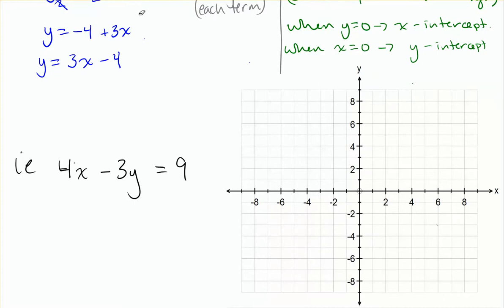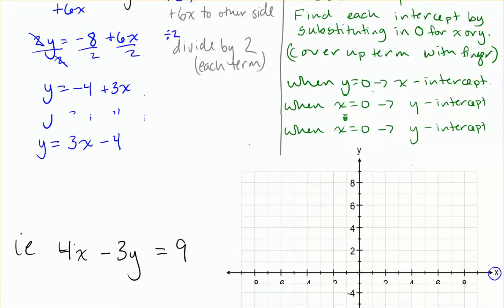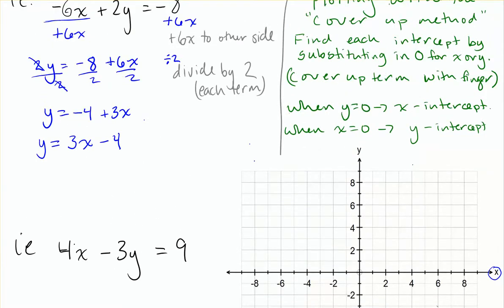And the reason that happens is because on the x-axis, y has a value of 0. So it will tell us where our line is when y is equal to 0, which puts us on the x-axis. And likewise, if I do x equals 0, that will put me on the y-axis, and I will get the y-intercept. So if I take that equation that we just did, I'll rewrite it down here. Minus 6x plus 2y is equal to negative 8.